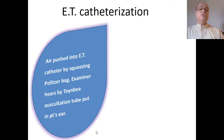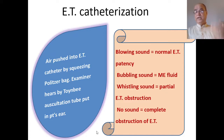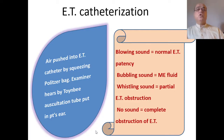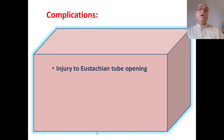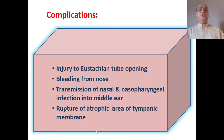Air is pushed through the Eustachian catheter by squeezing the Politzer bag, and the examiner listens via a Toynbee auscultation tube placed in the patient's ear. A blowing sound indicates normal Eustachian tube patency; a bubbling sound indicates middle ear fluid; a whistling sound indicates partial obstruction; and no sound indicates complete obstruction. Complications include injury to the Eustachian tube opening, nasal bleeding, transmission of infections into the middle ear, or rupture of an atrophic area of the tympanic membrane.